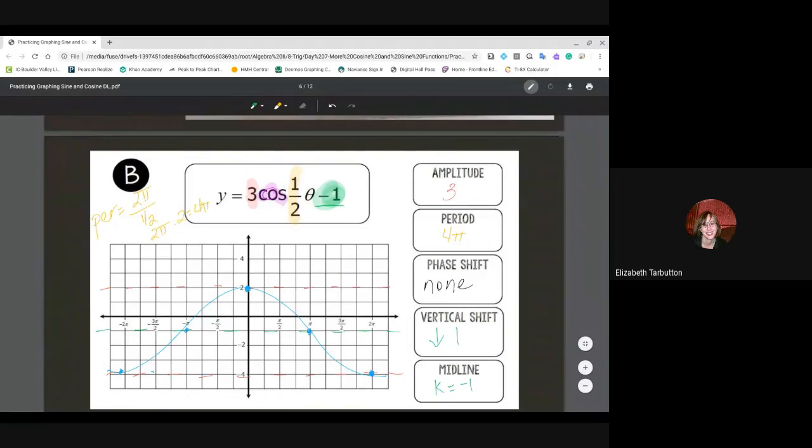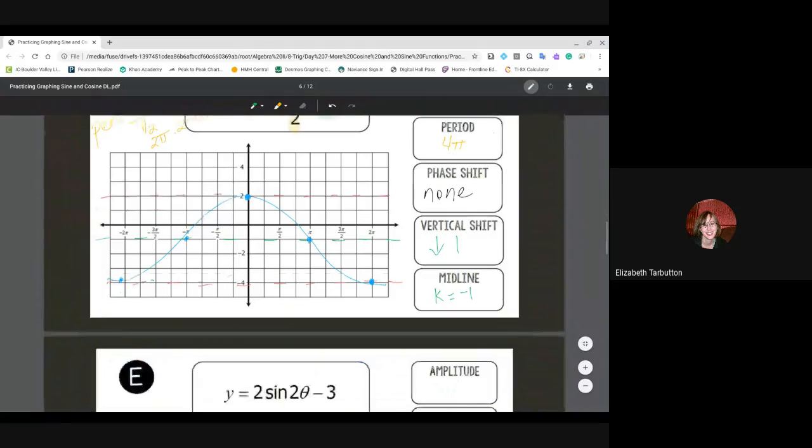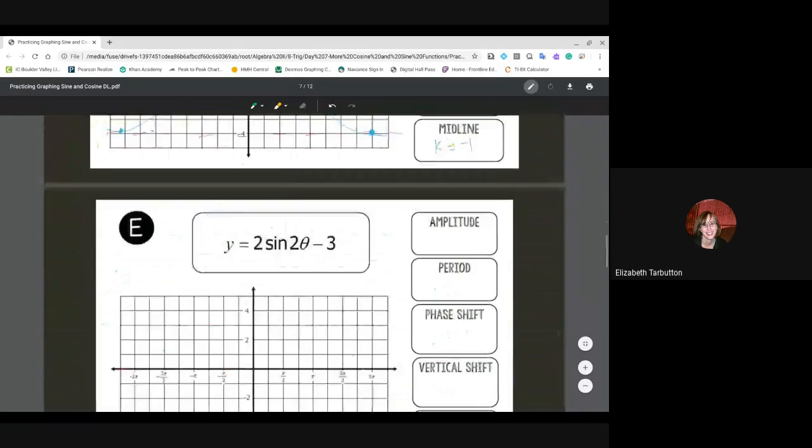Our vertical shift is down one, and our midline is k equals negative one. So there is an example of graphing a cosine function.